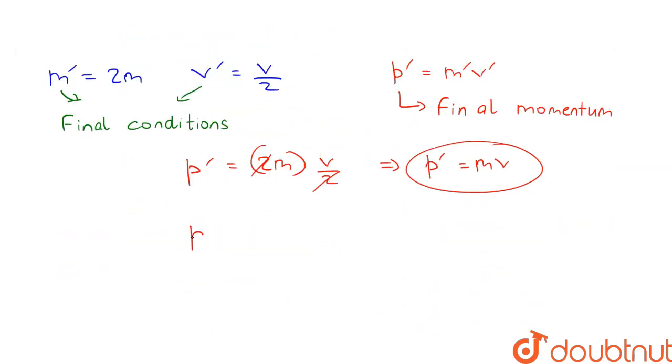Therefore, we can say that the final momentum p dash is equal to the initial momentum p. And we can say that momentum is the same for both conditions. This is our answer.